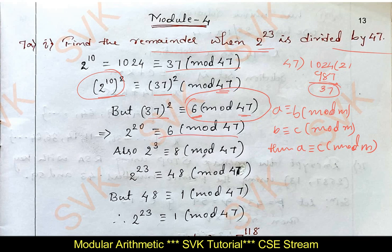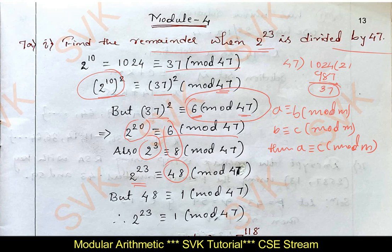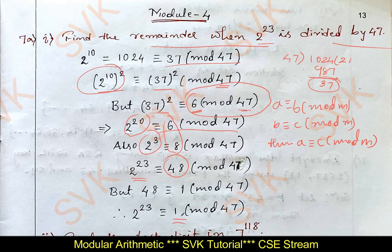Also, 2 cubed is congruent to 8 mod 47. Using the property, multiply 2 power 20 by 2 power 3 to get 2 power 23. So 6 into 8 is 48 mod 47, and 48 is congruent to 1 mod 47. Therefore, 2 power 23 is congruent to 1 mod 47. So 1 is the remainder when 2 power 23 is divided by 47.